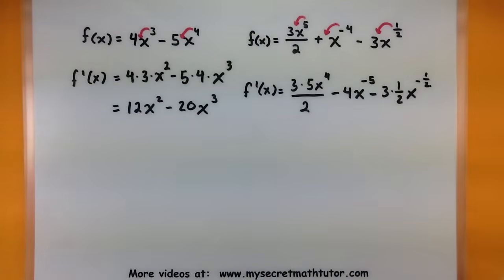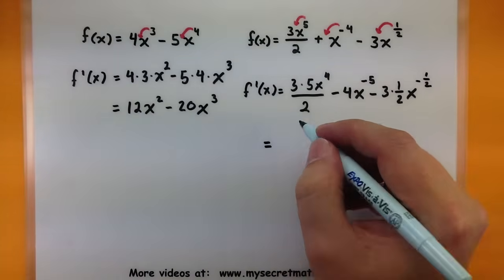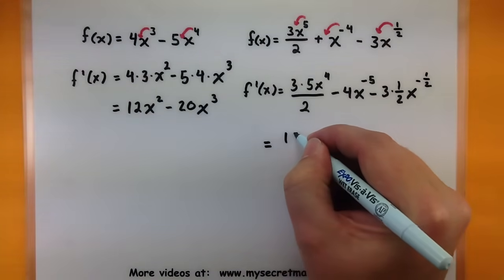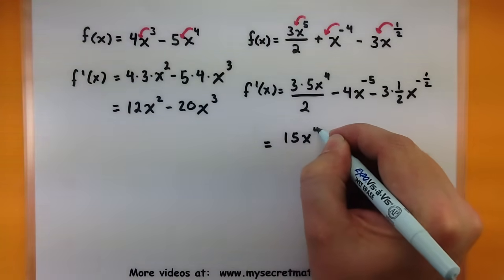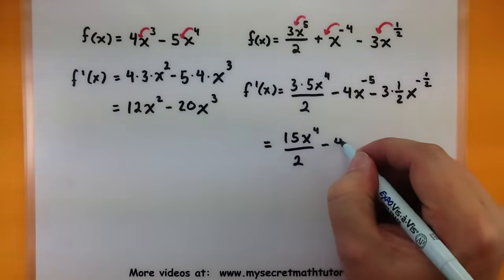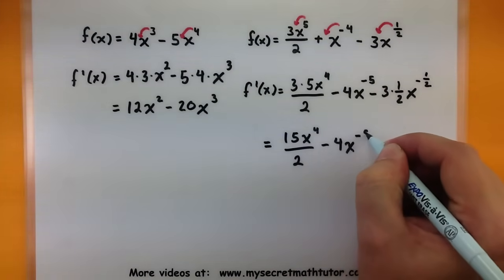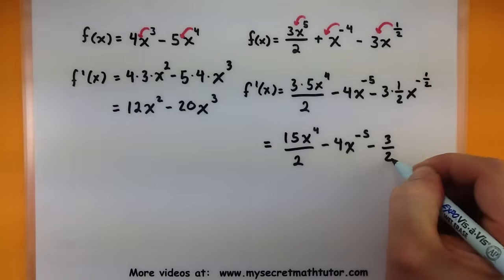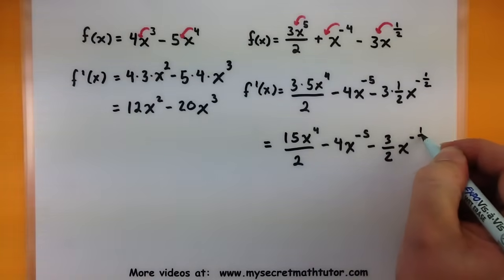Always reduce it by one whether it's negative or a fraction, doesn't matter. Now let's clean this up and finish off the problem. So 3 times 5 is 15, x to the fourth divided by 2, minus 4x to the negative five, and minus three halves x to the negative one half.